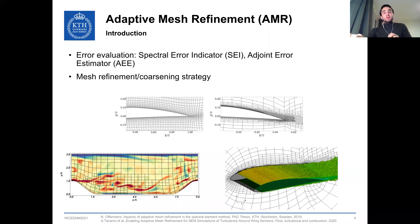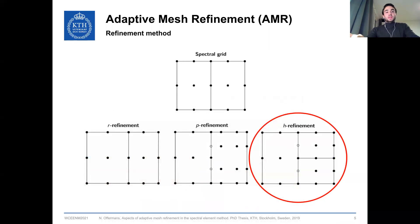In AMR, we have two main ingredients: first, we must be able to measure the error, and then we need to have a refinement strategy. In spectral element method, we have different approaches. We can have R refinement, where we move the boundaries of the element, keeping the same topology without introducing hanging nodes, but this is usually not efficient. On the other hand, we have P refinement, where we increase the polynomial order. But NEC doesn't allow elements with different polynomial orders. So what we do is H refinement, splitting the element in an isotropic way, dealing with hanging nodes using an interpolating operator, and using external libraries like P4est or ParMETIS to keep track of the grid hierarchy, element connectivity, and partitioning.